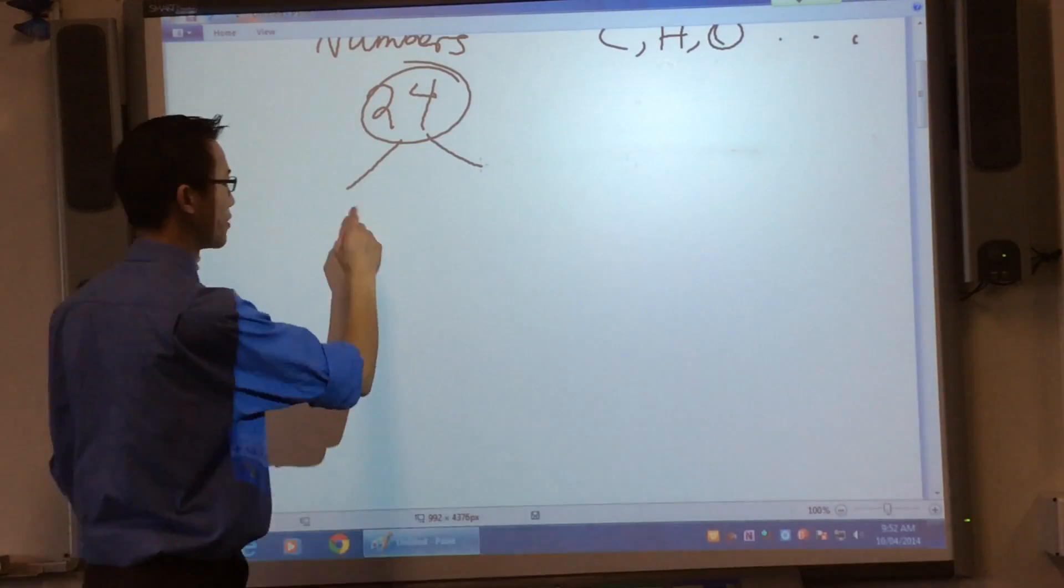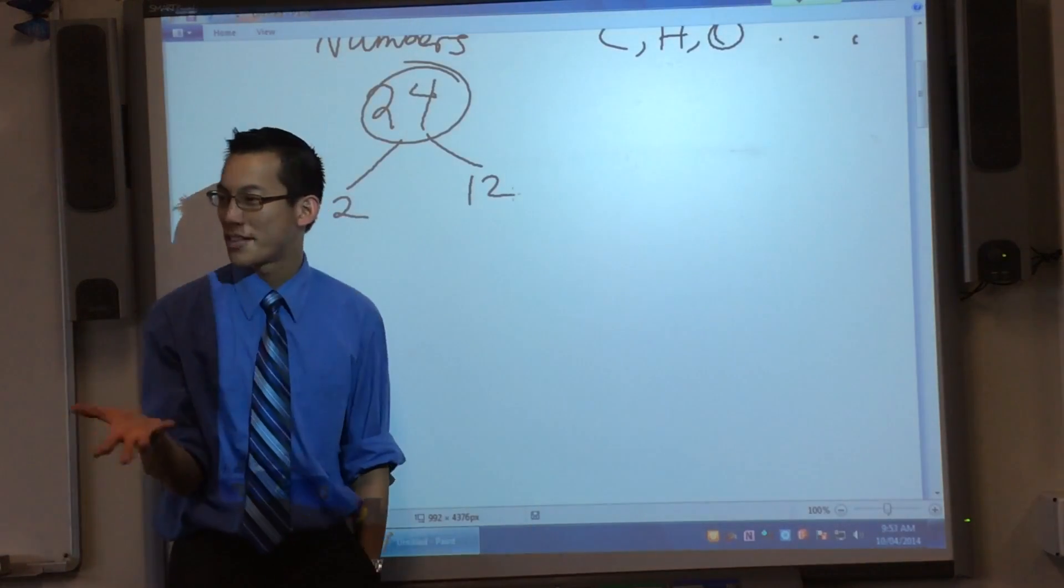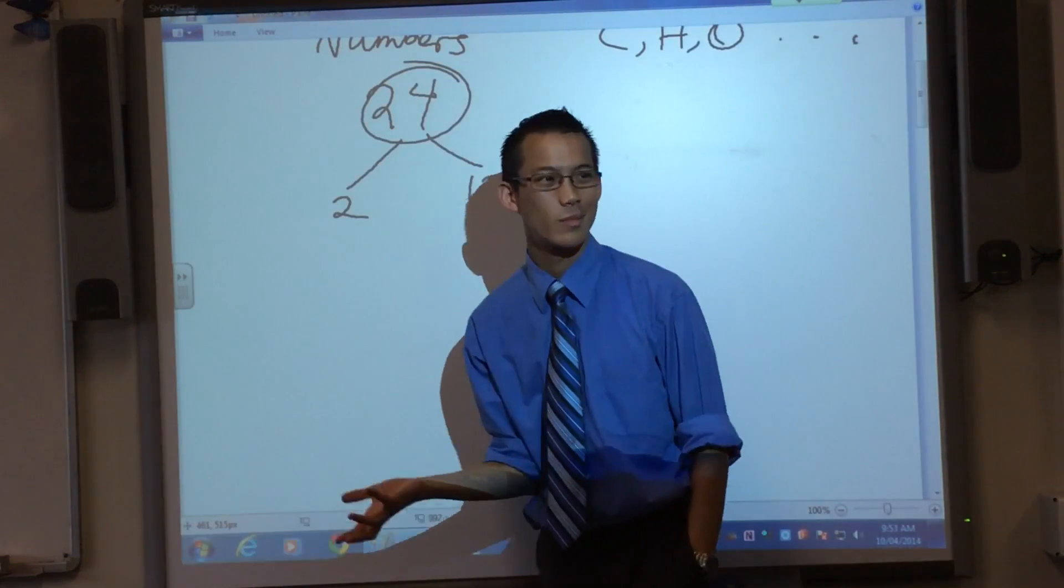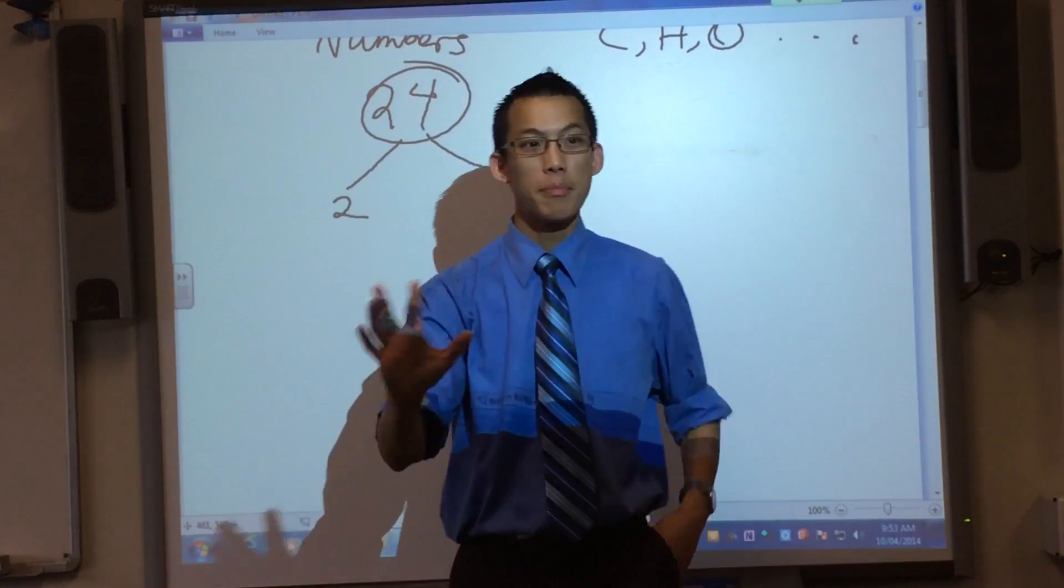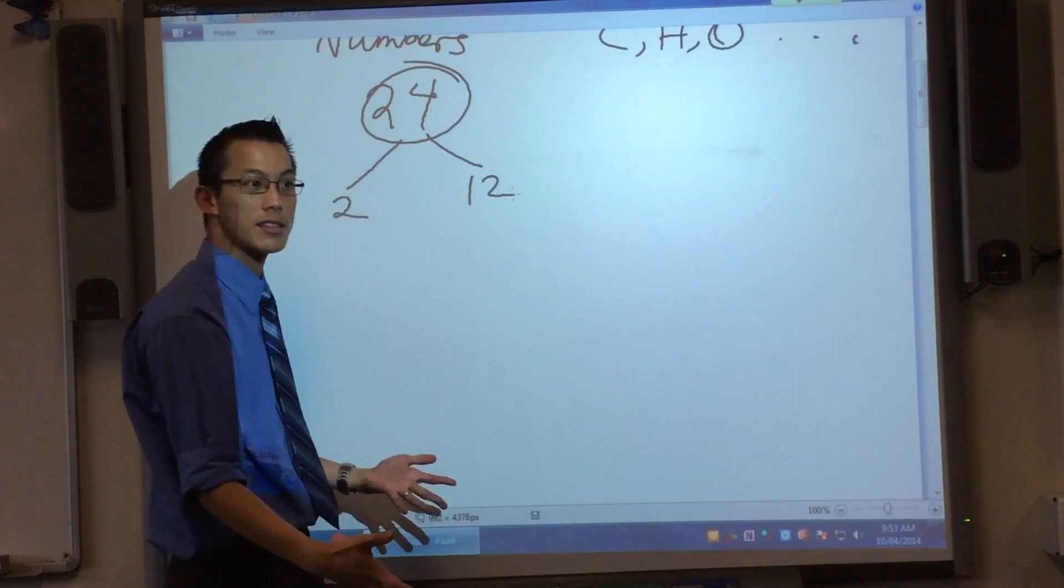2 and 12. 2 and 12 weren't the only pairs, right? What else could I pick? 6 and 4, what else? 8 and 3. But they're all going to be fine. If we follow them down to the end, we'll get to the same thing.